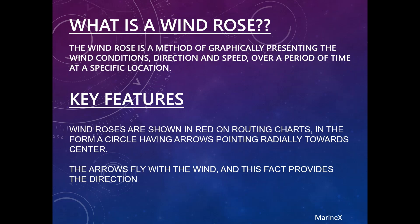Now let us see some more of its features. Wind roses are shown in red in color on routing charts in the form of a circle having arrows pointing radially towards the center. The arrows fly with the wind and this fact provides the direction of the wind.